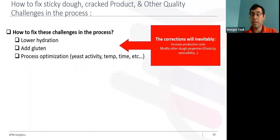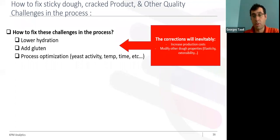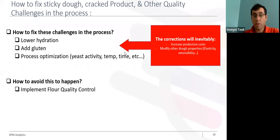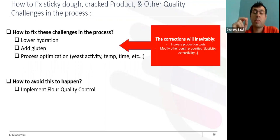Think about all the effects of these changes on the process. The best way is actually to avoid this happening on the production line and avoid problems appearing on the finished product. How can we avoid this? It's very simple — by implementing flour quality control to quantify the amount of damaged starch in each incoming flour.